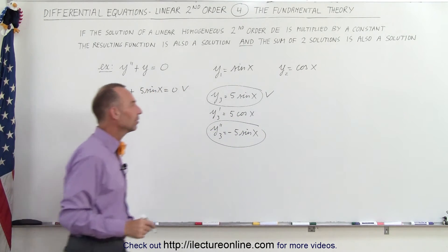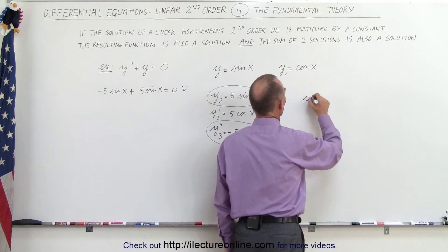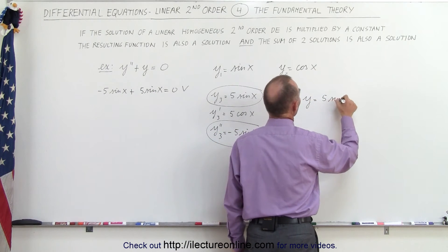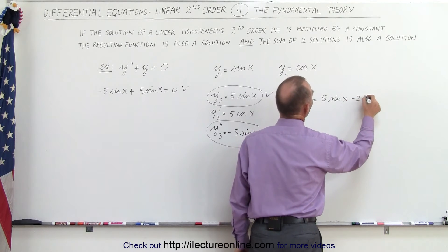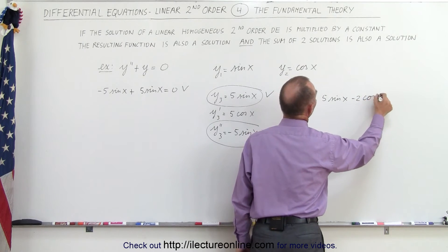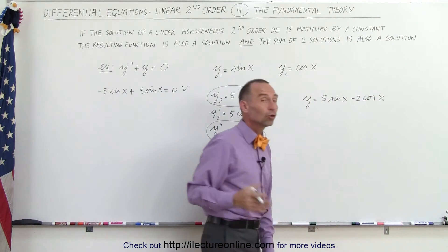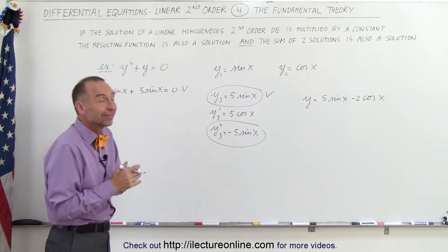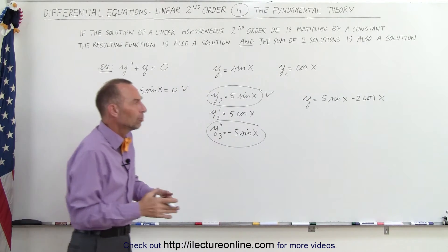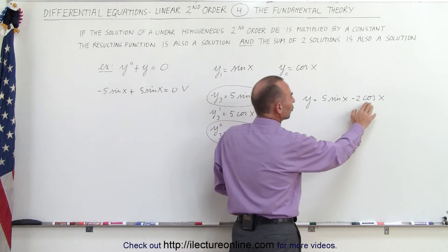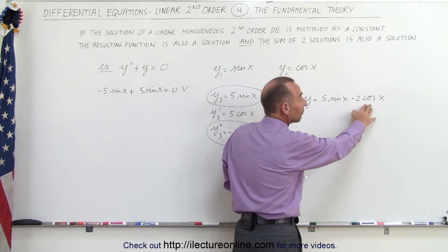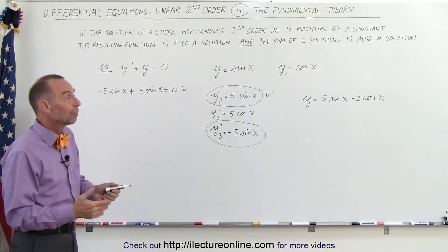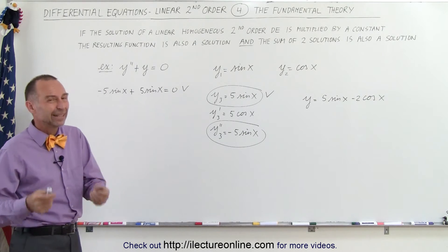What if we try another function — Y equals five times the sine of X minus two times the cosine of X? That should also be a solution to the differential equation because we're summing two solutions. At this point we realize that Y equals two times the cosine of X should also be a solution. But is a negative the same as a positive? Let's find out.